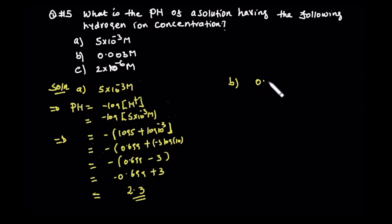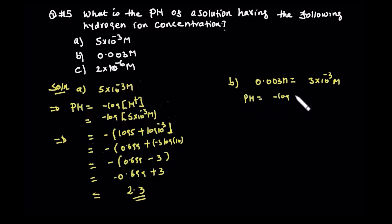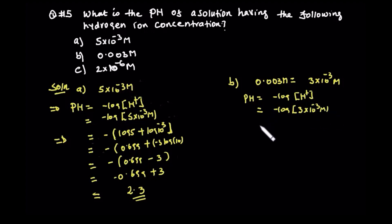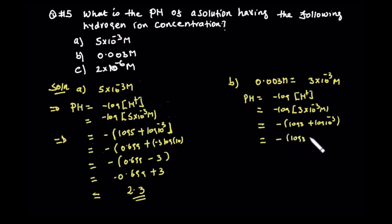Okay, B. 0.003 molarity equals 3 times 10 to the power of minus 3. So pH is equal to antilogarithm of the hydrogen ion concentration. Antilogarithm of 3 times 10 to the power of minus 3. So this is minus log 3 plus log 10 to the power of minus 3. That's the answer — log 3, then minus 3, log 10 equals 1.